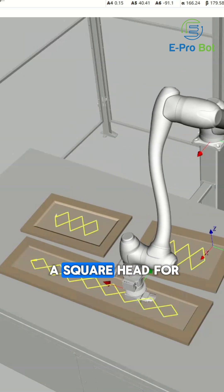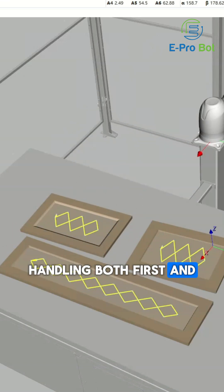It even switches to a square head for precise corner sanding, handling both first and second primer coats.